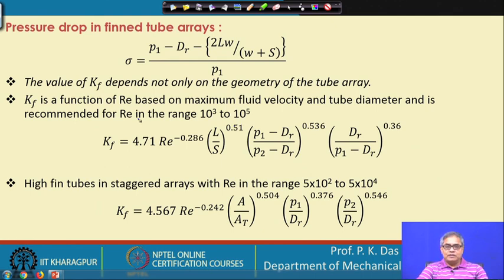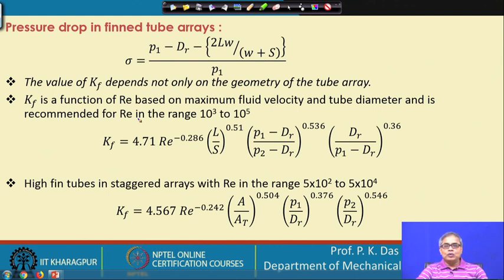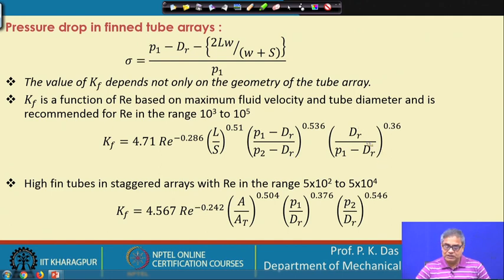Reynolds number Re is specified based on the bare tube diameter and the maximum velocity. It covers the range in which fin tube heat exchangers are generally used. K_f depends on Re raised to some power, and also on the ratio L/s, the pitch, the root diameter, and other geometric parameters. Basically K_f depends on Reynolds number and the diameters of the tube and fins.